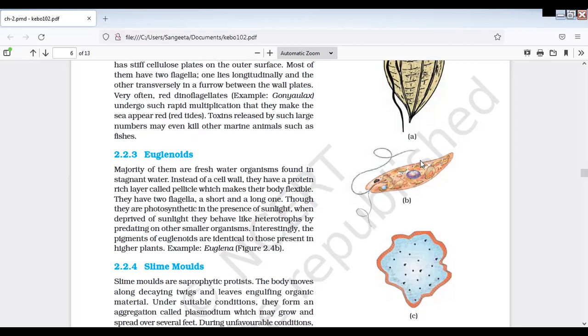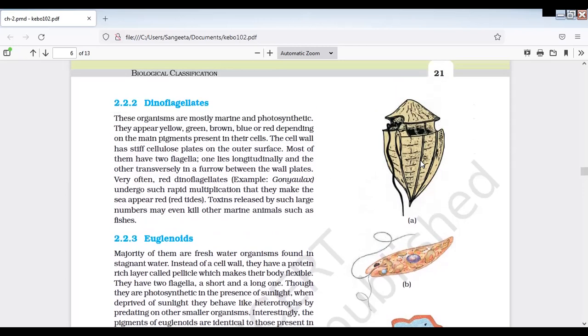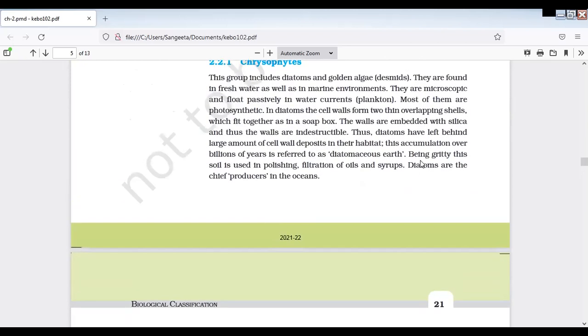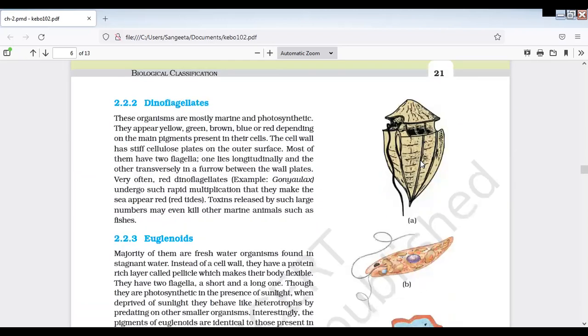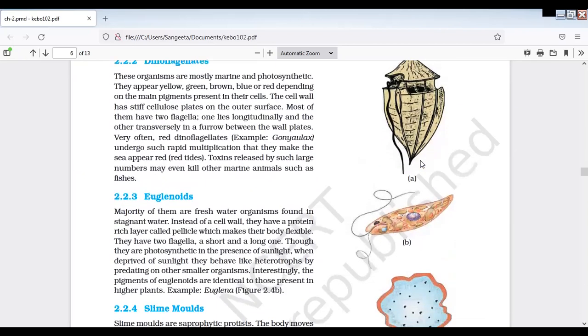Dinoflagellates example, Euglena. But we are going to cover more plant-like protista including diatoms. Chrysophytes, chrysophytes are golden algae and diatoms. And the dinoflagellates, Euglenoids.